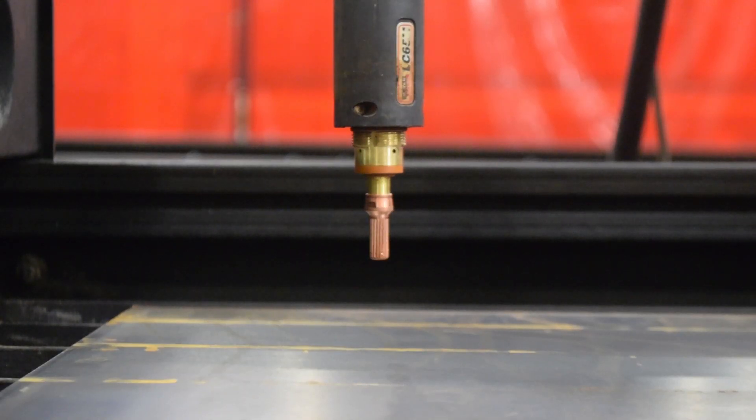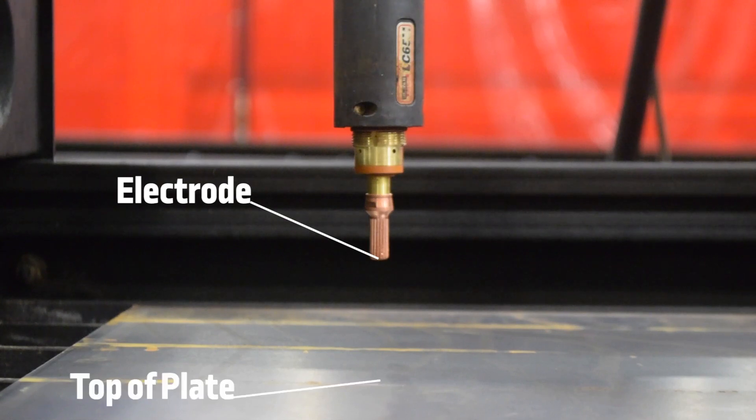The arc voltage is the measure of electrical potential between the electrode, the conception of the plasma, and the top of the metal plate where the electricity completes the circuit. The greater the potential that is needed to cross this gap, the higher the reading of arc voltage.